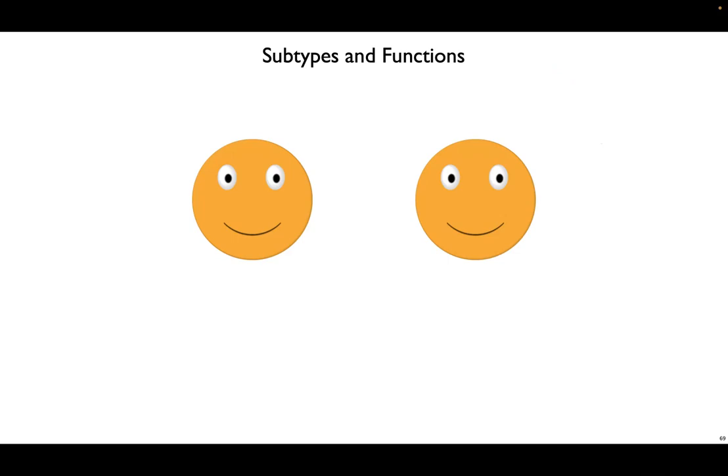There are other places where we need to relax our subtyping relation, and one of them is with functions. So let's take a look at functions, and we have Alice and Bob here as an example.